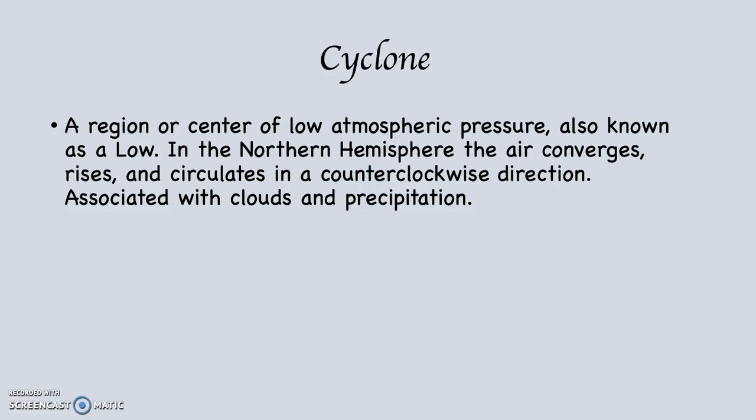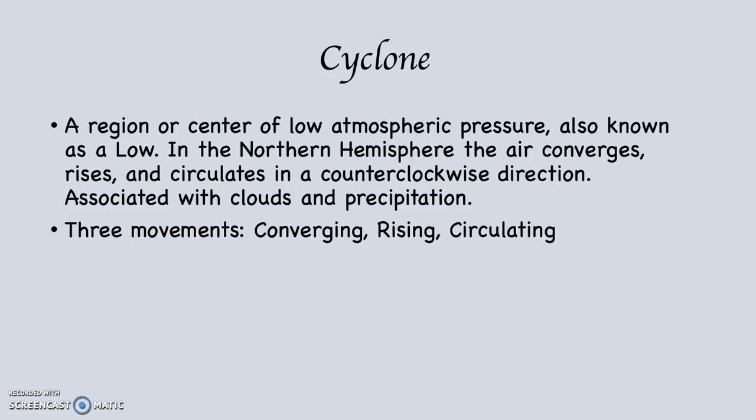In the Northern Hemisphere, the air converges — which means it comes together — and rises. Cyclonic systems are associated with clouds and precipitation. There are three movements, and it's critical that you keep them in mind: converging, rising, and circulating air.